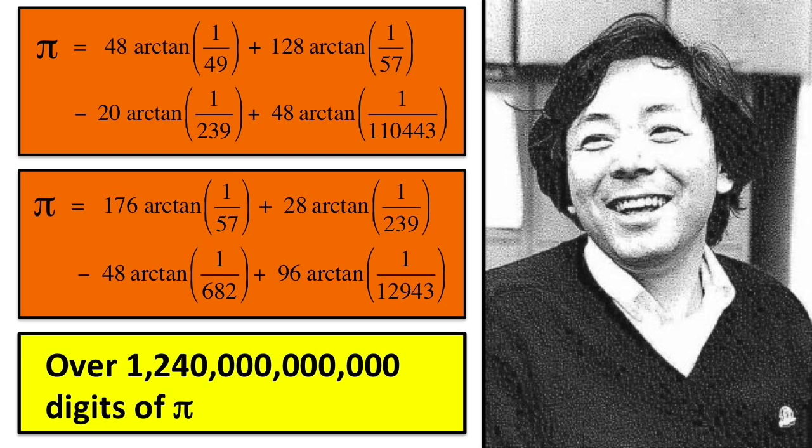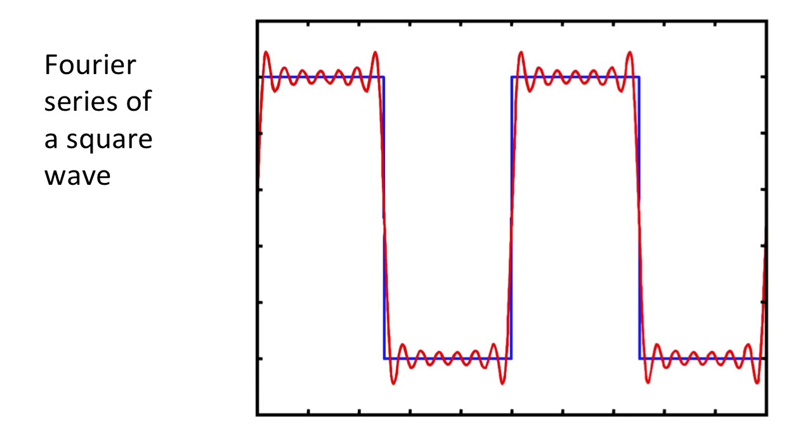To get agreement after all those arithmetic operations and data transfers is strong evidence that the computers are functioning error-free. A spin-off of these pi calculations has been the development of the Fast Fourier Transform, a groundbreaking tool used in digital signal processing.